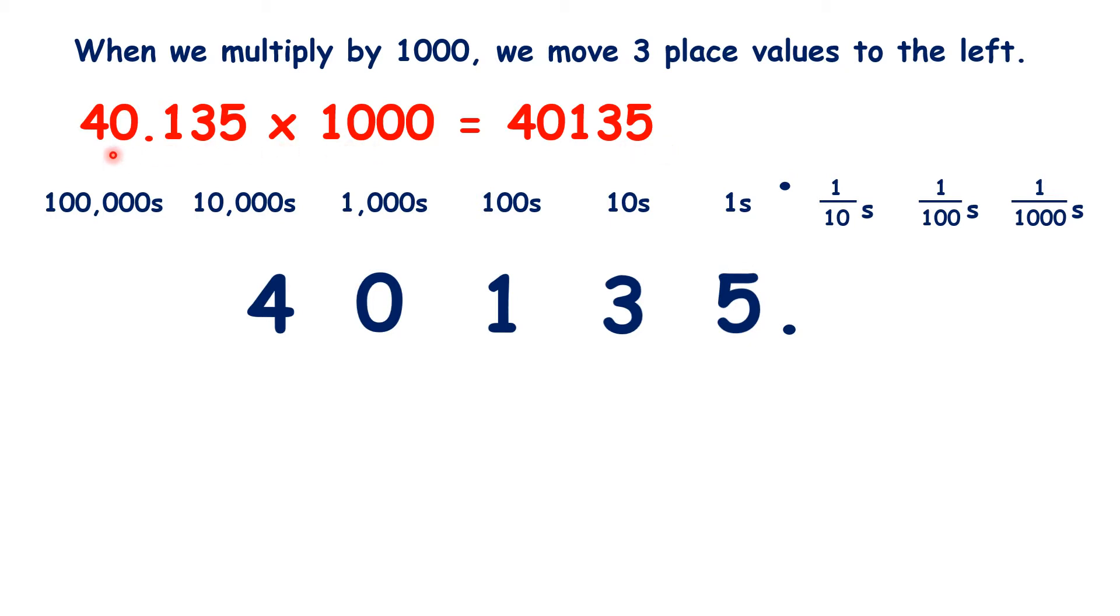And that answer makes sense. If we know that 40 times a thousand is 40,000, then 40.135 times a thousand is going to be just a bit more than that.